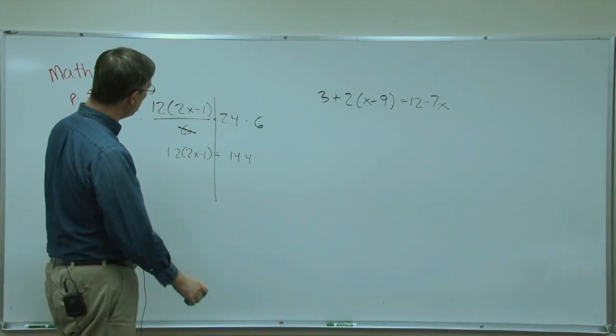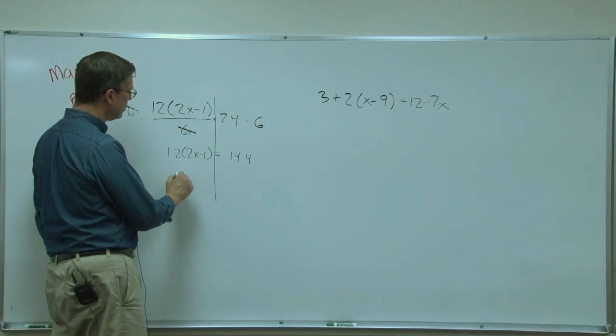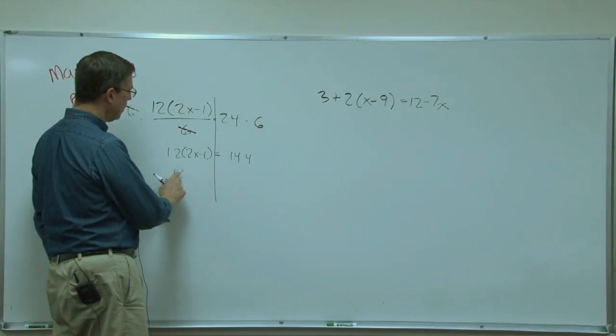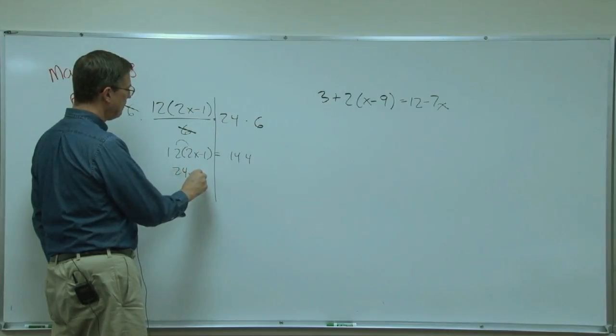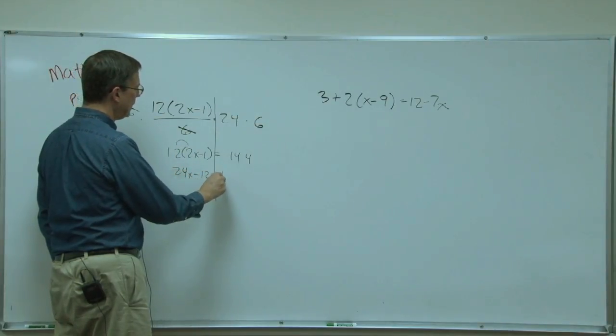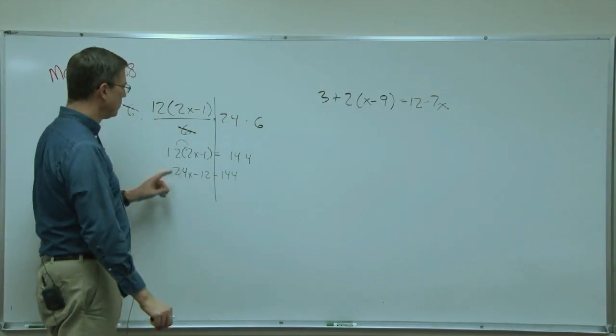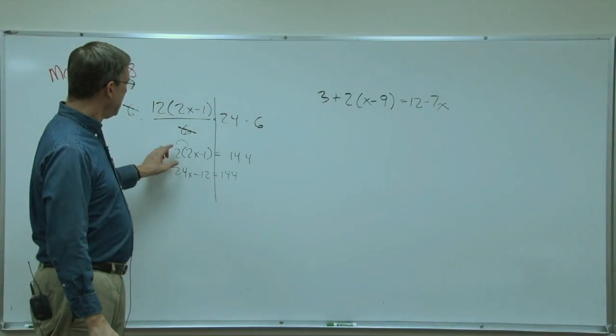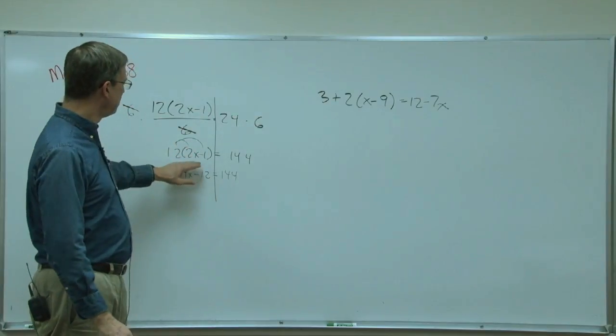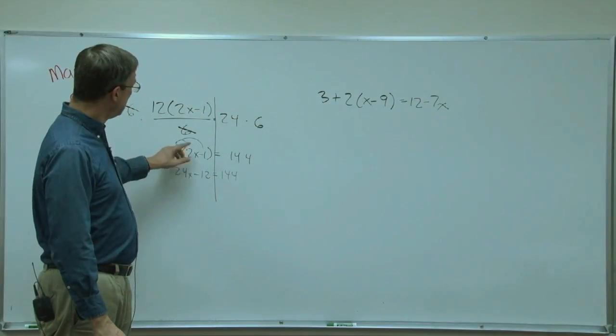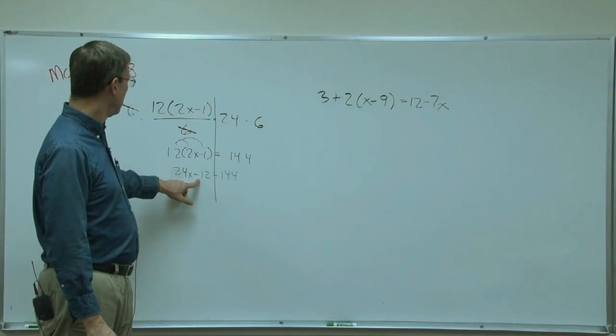Then the next step is we are going to distribute, so 12 times 2 is 24x minus 12 equals 144. We take the division and distribute it times both of these, so 12 times 2x and then the negative 1, so we have to keep this negative.